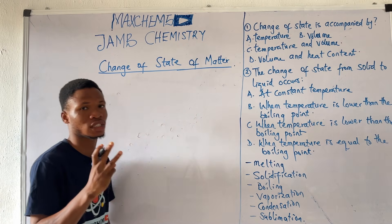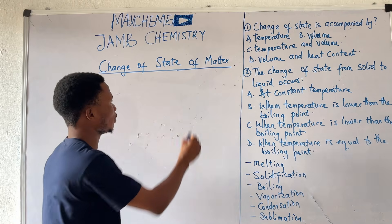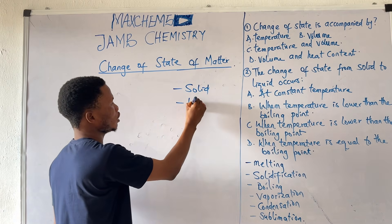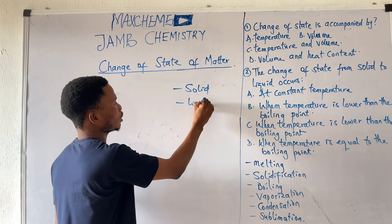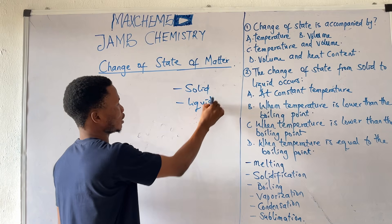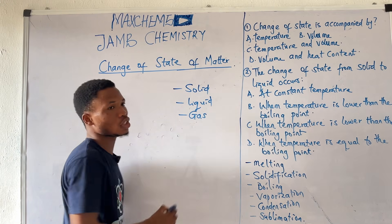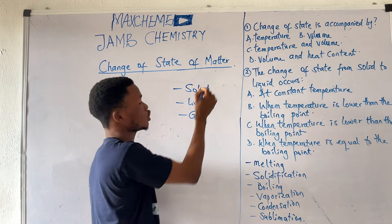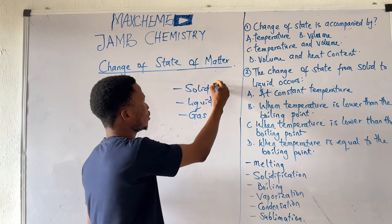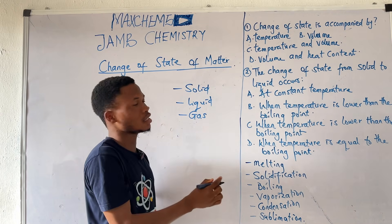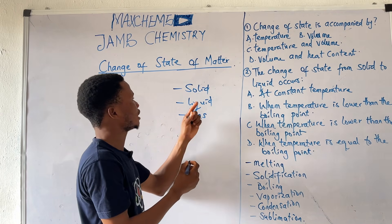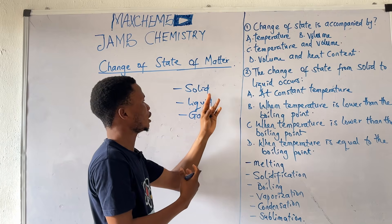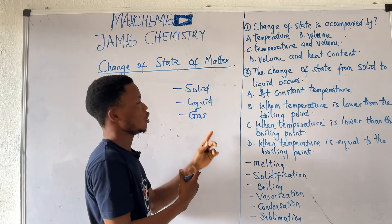We have three phases of matter. We have solid, liquid, and gas. So the change of phase of a substance from one phase to another — that is, the substance might be solid, then we are going to change it to liquid or gas.